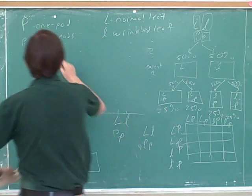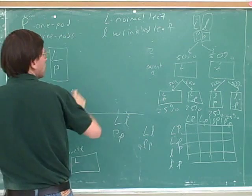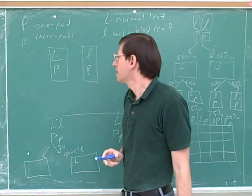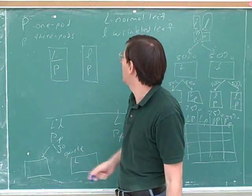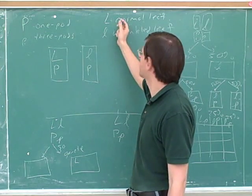But let's suppose that the gene for your pod type happened to be on the same chromosome as the gene for your leaf type.